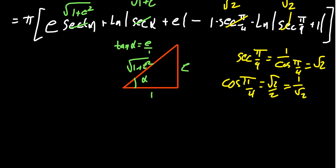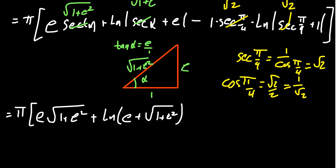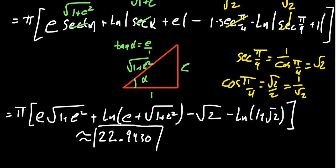Putting this all together, we end up with π times e times the square root of 1 plus e squared, plus the natural log of e plus the square root of 1 plus e squared. I would love to say there's some nice simplification there, but not one that seems obvious. You get minus the square root of 2 and then minus the natural log of 1 plus the square root of 2. We then see that we get this solution, which is massively complicated. This becomes approximately 22.9430. So we get this estimate accurate to four decimal places.